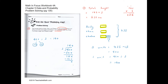Checking our answer: Andy's height is 140 centimeters, Chen's height is also 140 centimeters, and Chelsea's height is 140 plus 15, which equals 155 centimeters.